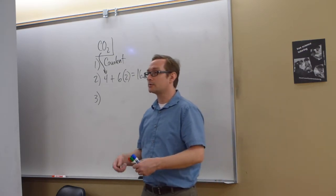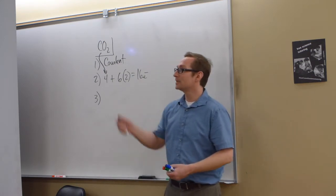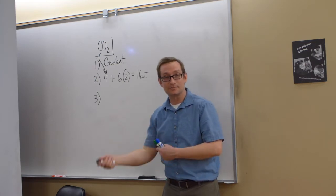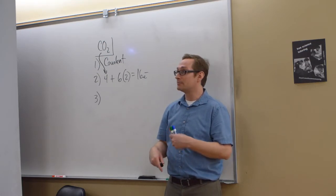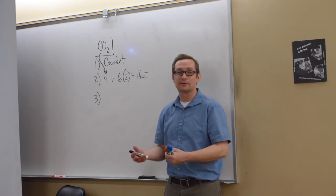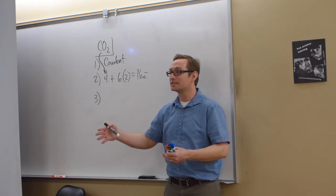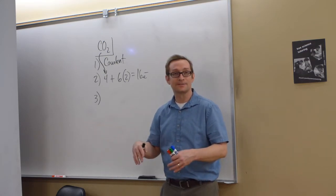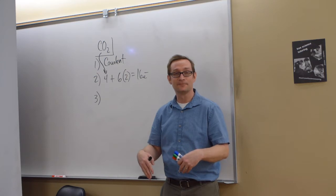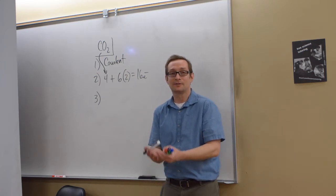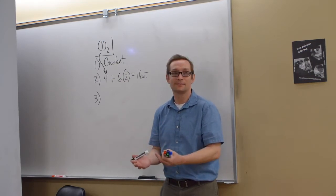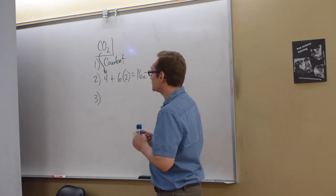The more electronegative atoms go outer. Another way: the atom with the greatest need for an octet goes in the center. Carbon is four electrons away from being like neon, so it goes in the center. Oxygen is much more electronegative than carbon, so it goes outer. Low electronegativity, or needing the most electrons for an octet — these are two ways of saying the same thing.